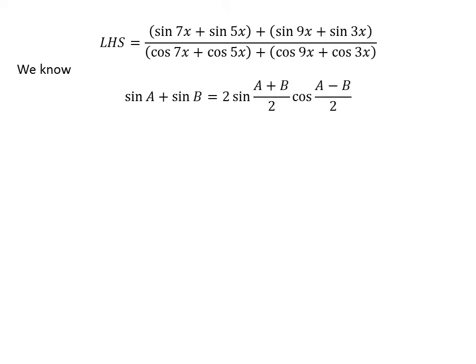We know the trigonometric identity: sine of a plus sine of b is equal to 2 times sine of half of (a plus b) times cosine of half of (a minus b). The proof of this identity is given in the video appearing in the upper right corner, and the link is also given in the description section.